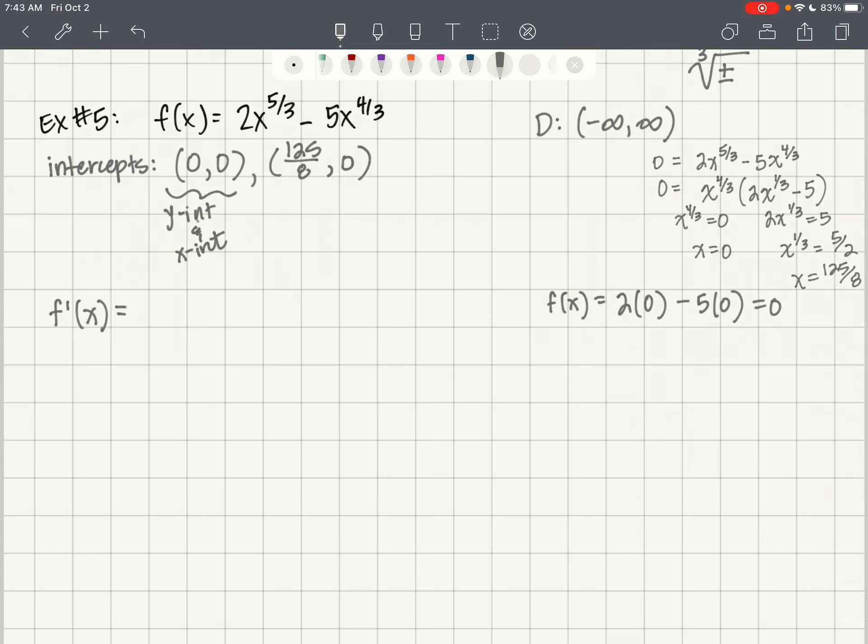Our first derivative is going to equal 5/3 times 2x to the 2/3 minus 4/3 times 5x to the 1/3. That gives us 10/3 times x to the 2/3 minus 20/3 times x to the 1/3, and that's our first derivative.